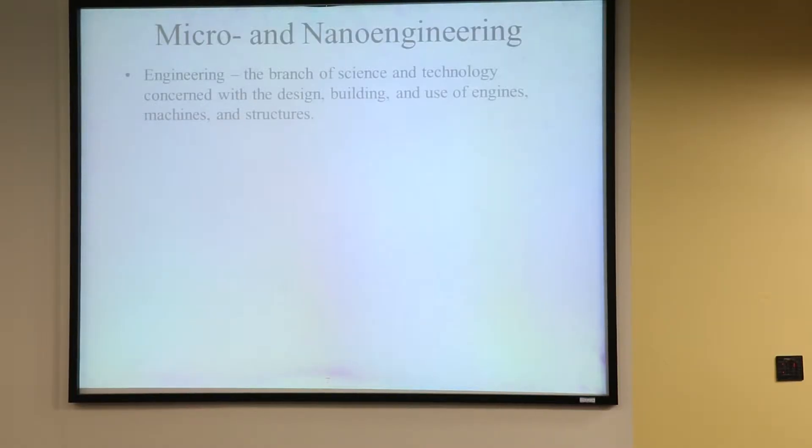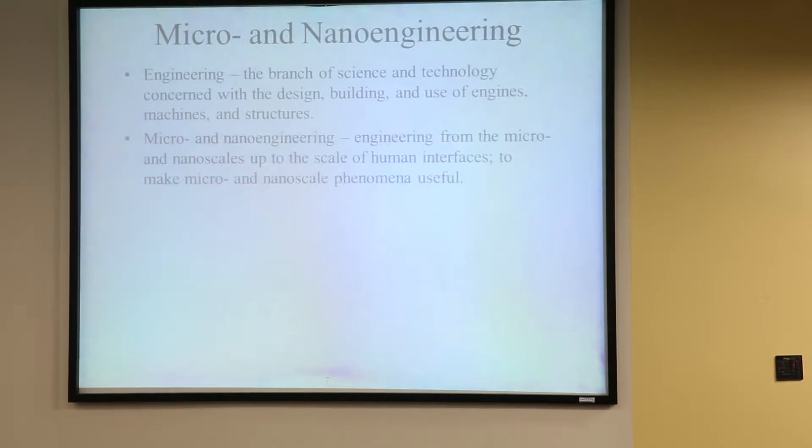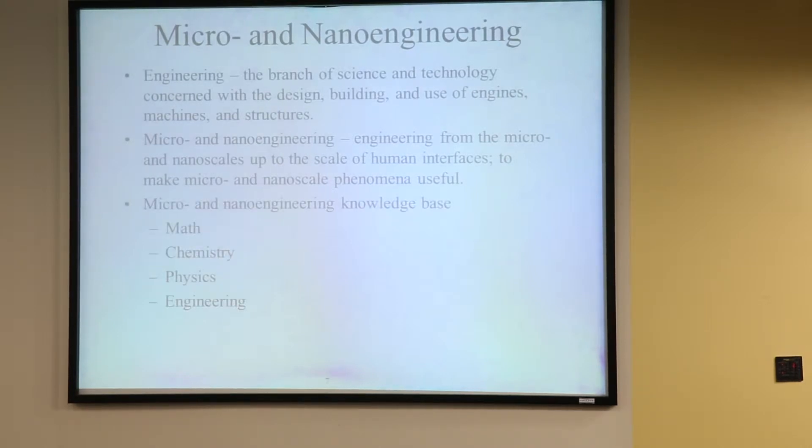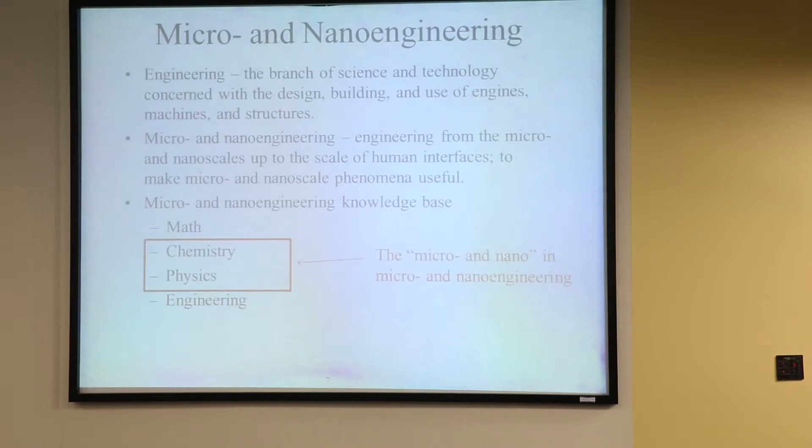Engineering is a branch of science and technology concerned with the design, building, and use of engines, machines, and structures. Micro and nano engineering has to do with doing things at really small scales and scaling it up to some human interface. To get this concentration, you end up building a deeper knowledge base in physics and chemistry, in addition to your math and engineering curriculum. As you make things smaller, you have to account for the granularity of materials—we're used to thinking of materials as a continuum, but at tiny scales you can see individual atoms and grains, which causes very different behavior. You learn new rules and can exploit these things to make new things.